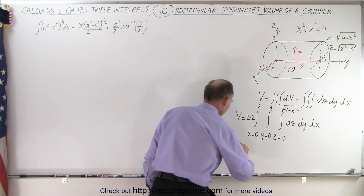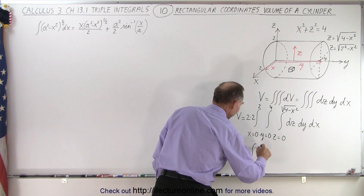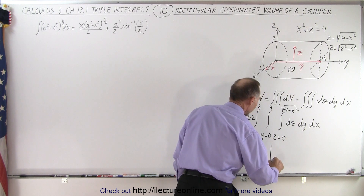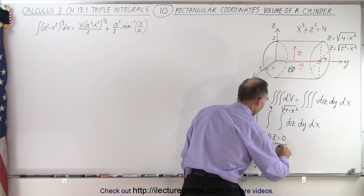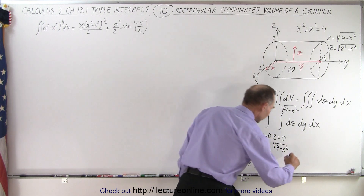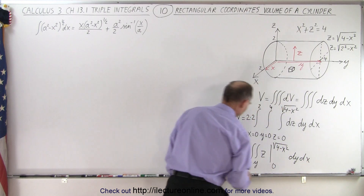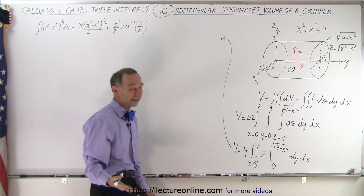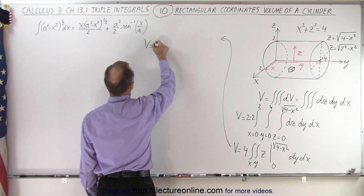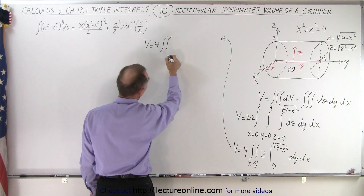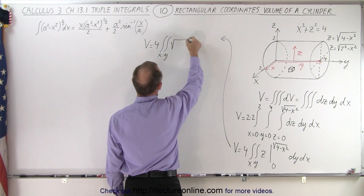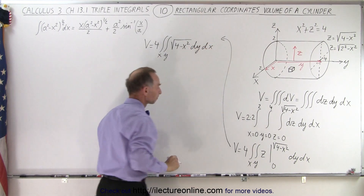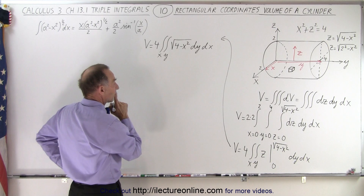Now we're ready to integrate. V equals 4 times the double integral over x and y, and the dz integral becomes z evaluated from 0 to the square root of 4 minus x². We still have dy and dx, so plugging in the upper limit gives the square root of 4 minus x², and the lower limit gives 0. So the volume equals 4 times the double integral of the square root of 4 minus x² times dy dx.